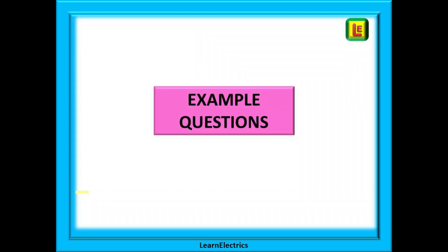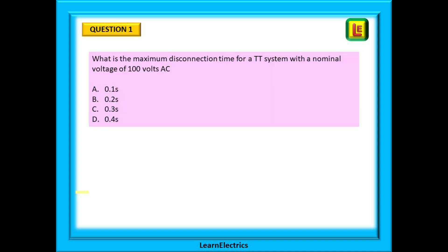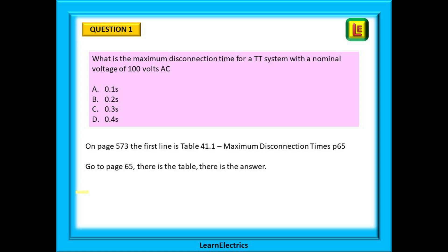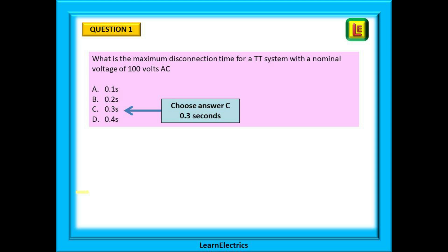Let's do a few example questions to show how this works. Question one: what is the maximum disconnection time for a TT system with a nominal voltage of 100 volts AC? We know that disconnection times relate to keeping users safe from electrical faults, and we know there will be a table for this. Safety is part four, so we begin our search on page 573 in the top half where all numbers begin with four. The first line is table 41.1, called maximum disconnection times, directing us to page 65. Go to page 65 and there is the answer — 0.3 seconds, answer C.